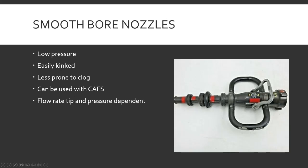Smoothbore nozzles can be used with CAFs — compressed air foam systems. If you were just to hook up an old-school foam eductor to this and try to run foam out of here, it's not going to get air mixed in and it won't foam up. But with CAFs, where they put air into the hose line along with foam and water, it'll come out pre-aerated, so you can get decent foam out of a smoothbore — which is why CAFs is important for smoothbore nozzles.